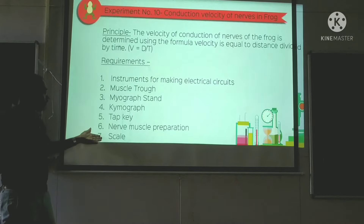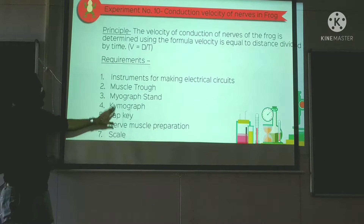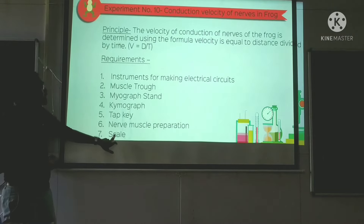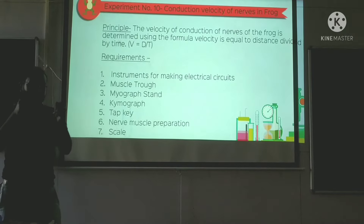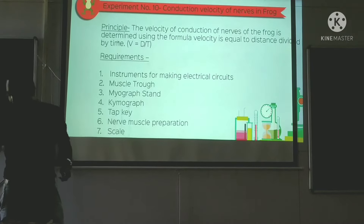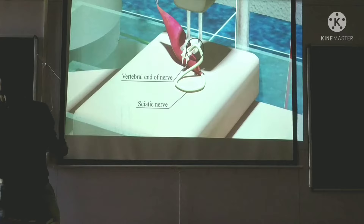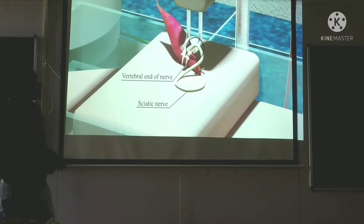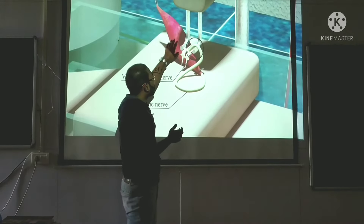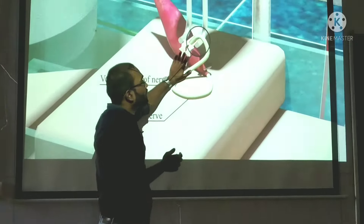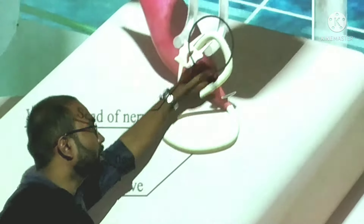The instruments required are the same as before, plus a new one — a scale. We'll take a scale and measure. Here they have taken a nerve, a gastrocnemius muscle, and the vertebra — that means it's from the vertebral end.